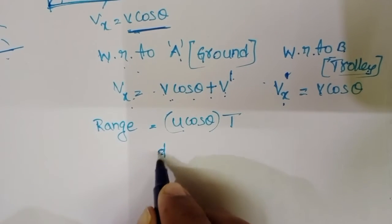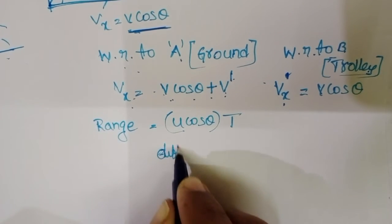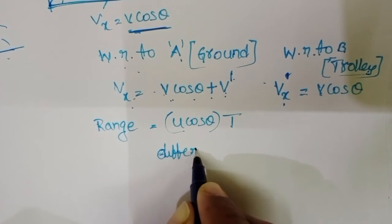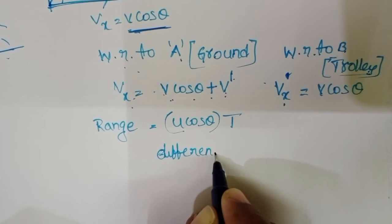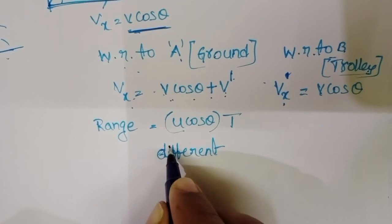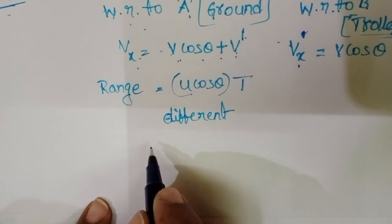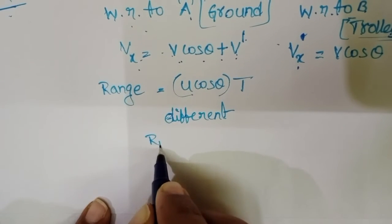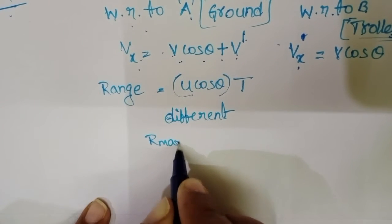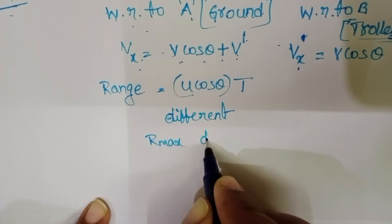Range is different relative to ground and trolley. When range is different, then maximum range is also different.